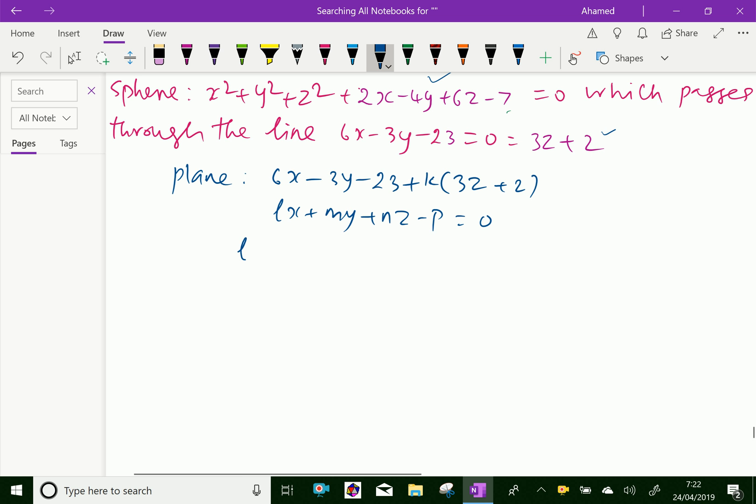We are comparing l = 6, m = -3, n = 3k and we call p = 2k - 23 + p = 0.